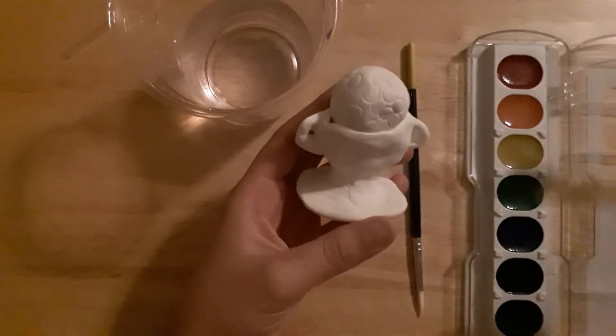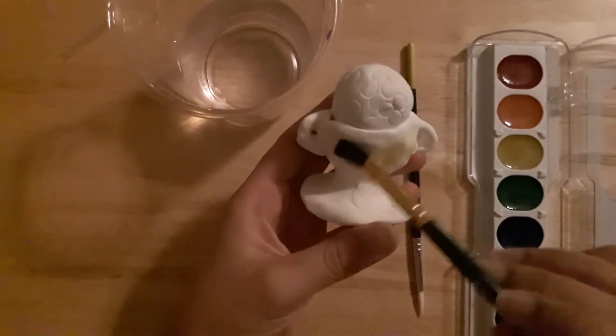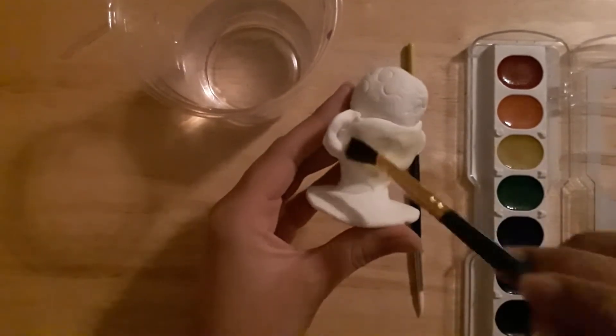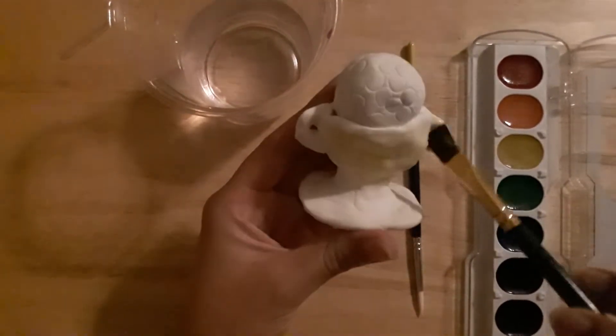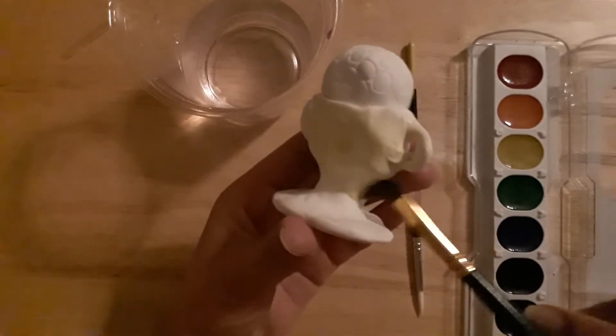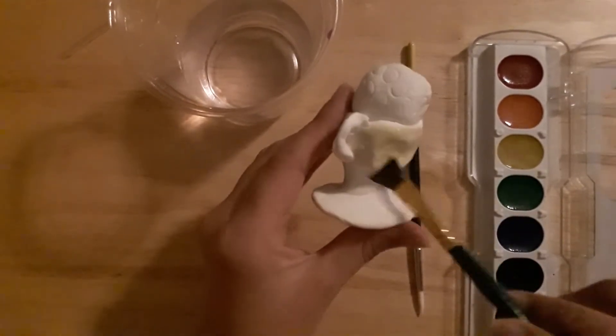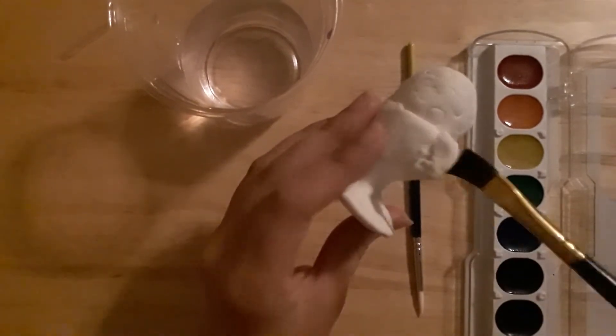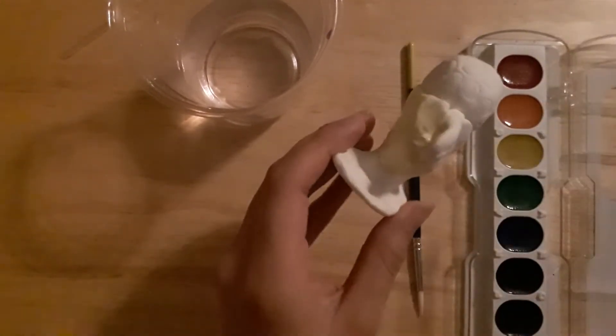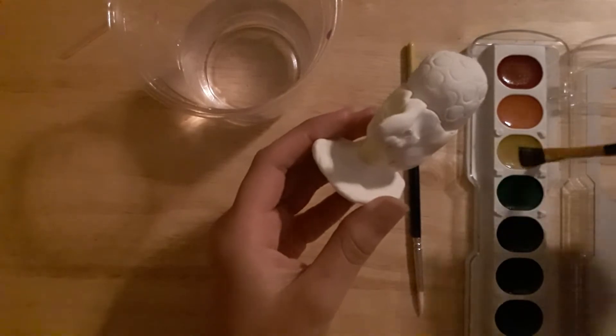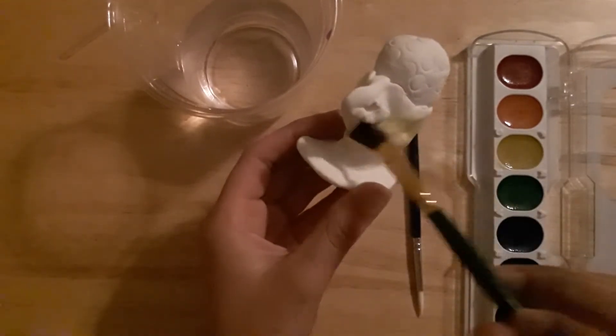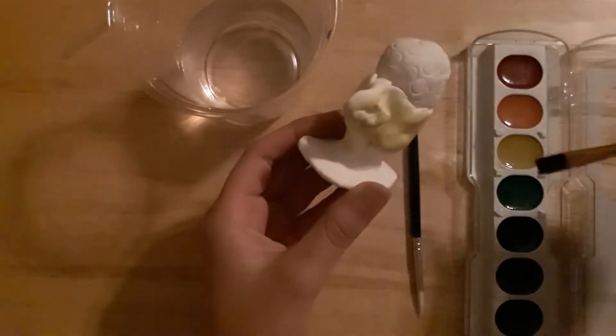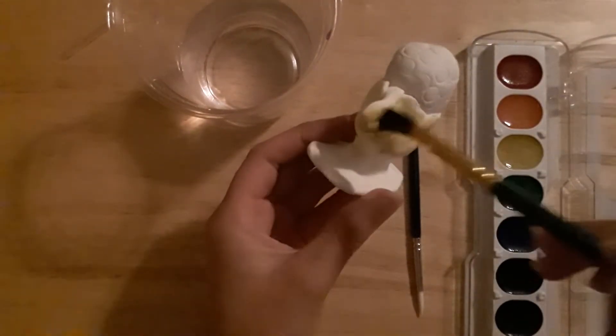As you can see, I'm just painting it all around and making sure that it is nice and painted. You want to use a light amount of water so your sculpture is not soaking wet when you're painting it. Just lightly add water to your brush so you can make sure the color is also showing on your sculpture.